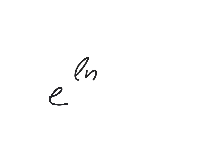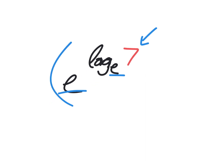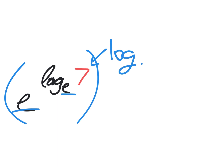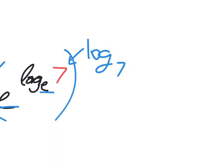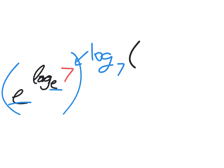How do we make that hard? Make the base obscure — use e and write ln as log base e. When you recognize ln as log base e, the bases match and the answer is already there. Then we can make it even harder by layering: take that whole result — which equals seven — and raise it to the power of log base seven of log base seven of log 10.